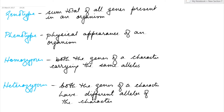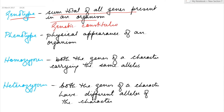Genotype is the sum total of all genes present in an organism, or you can say it is the genetic constitution of an organism. Phenotype is the physical appearance of an organism. The phenotype depends on the genotype.